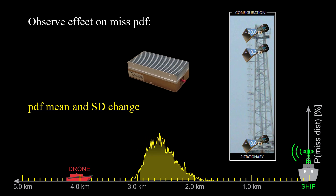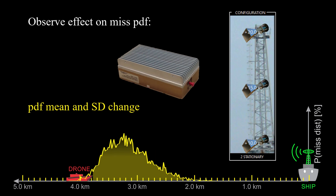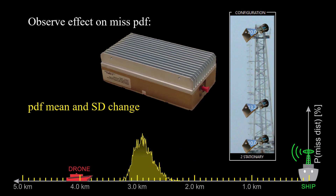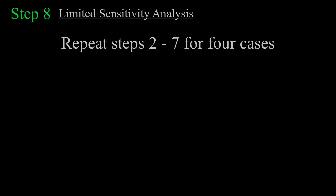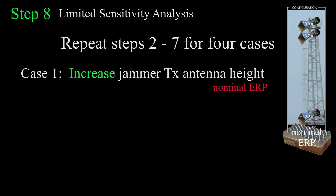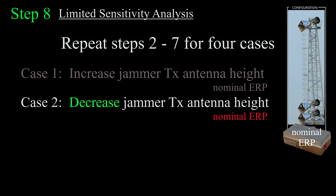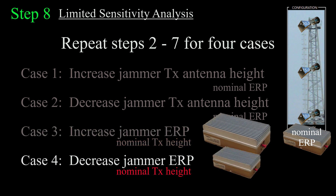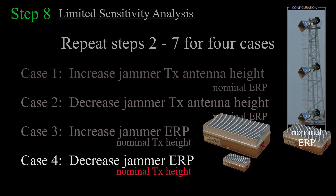Higher power will always be desirable, but it may be that a small change in antenna height can boost low-power performance. What are the odds that a randomly picked jammer antenna height is the best possible position for the expected range of attack scenarios? This means repeating steps two to seven for four cases. Case one: raise the nominal jammer antenna height by a bit, holding jammer ERP at the nominal value with nominal variability. Case two: same as case one, but lower the jammer antenna height by a bit. Case three: keep the original antenna height and increase the jammer ERP by a bit. Case four: same as case three, but lower the ERP by a bit.